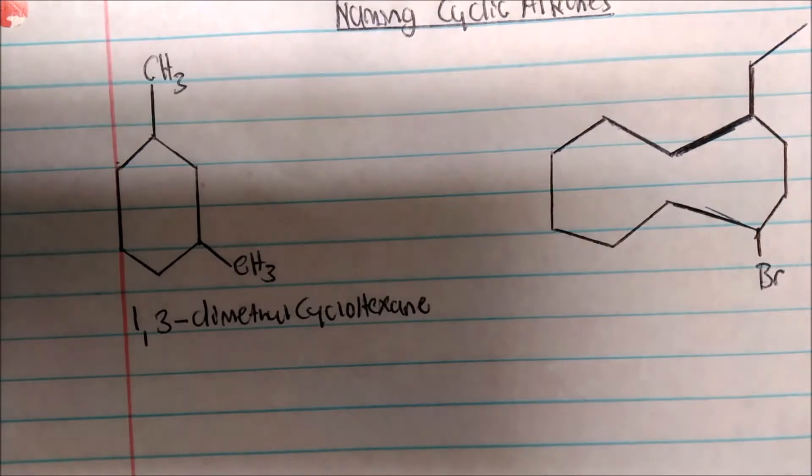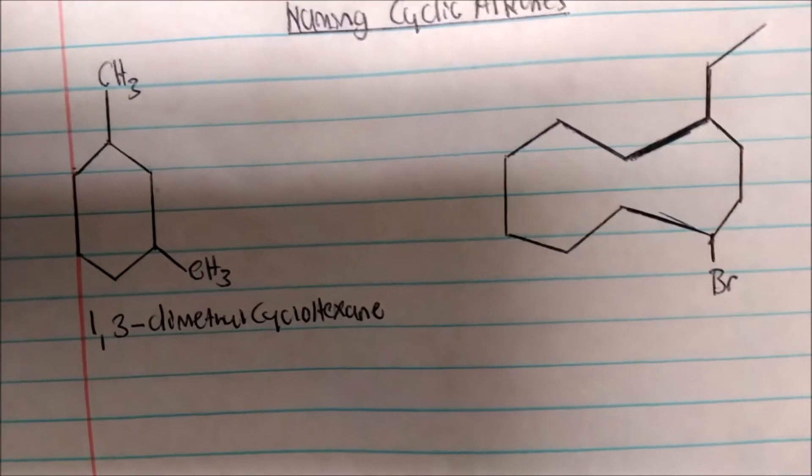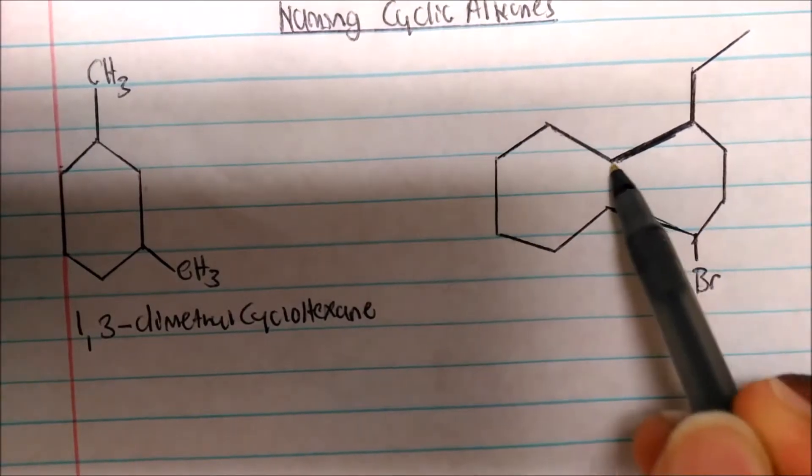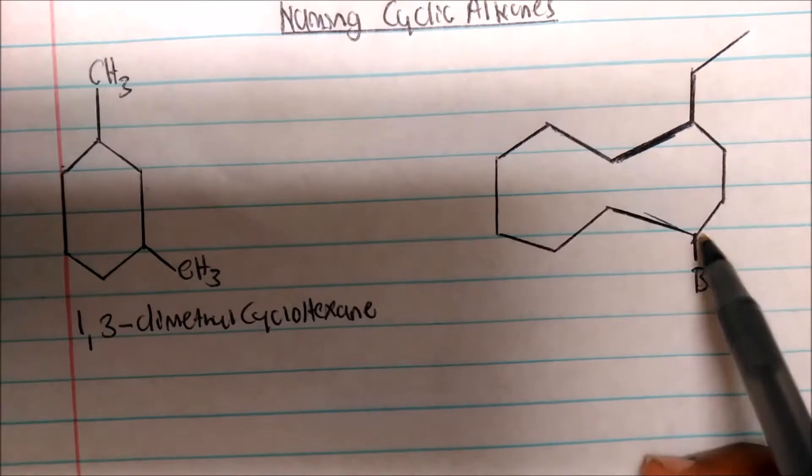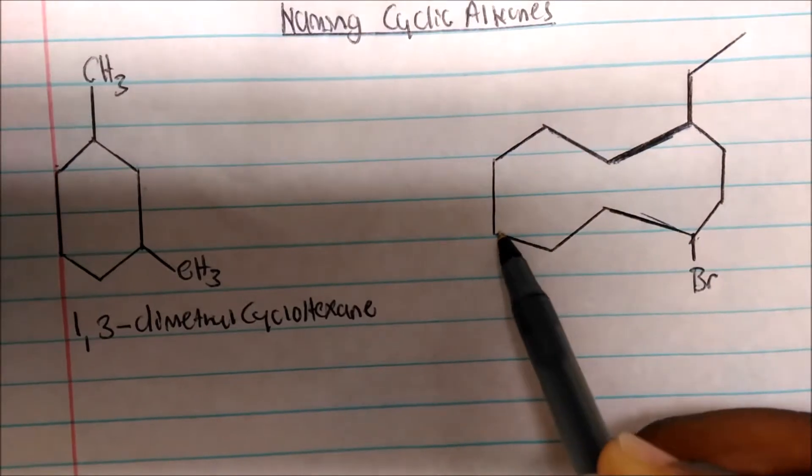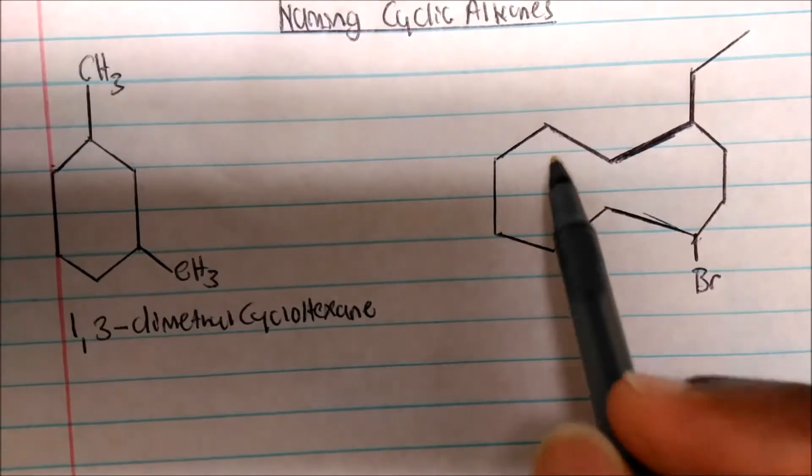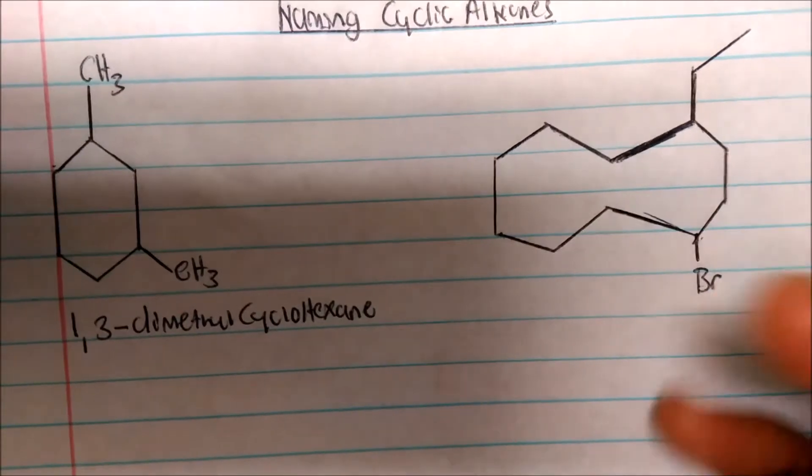How about the other one? How about this one right here? Let's call the carbon chain. So again, one, two, three, four, five, six, seven, eight, nine, ten. So this is decane, but it's a cyclic molecule, so the parent will be cyclohexane.